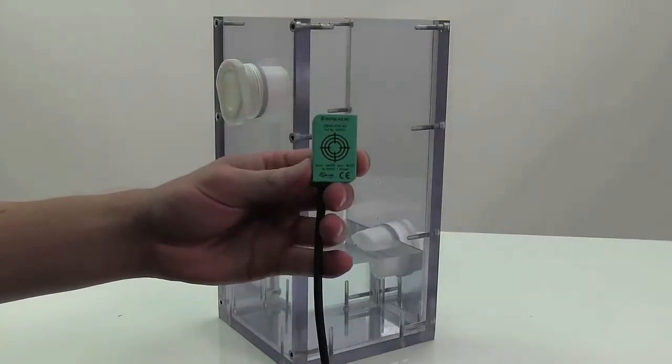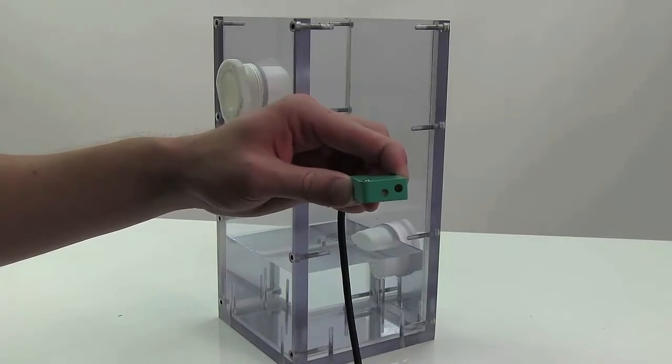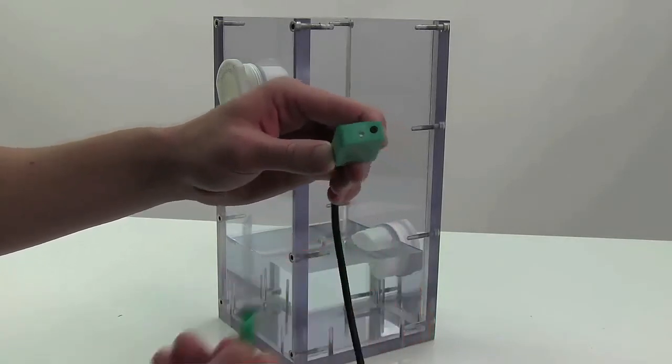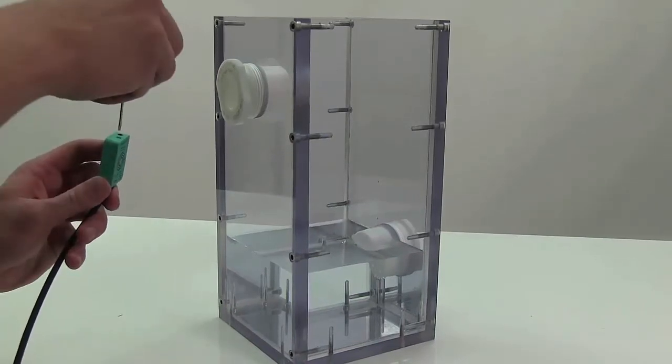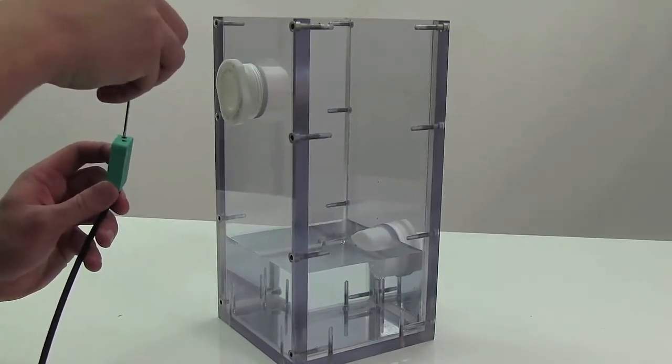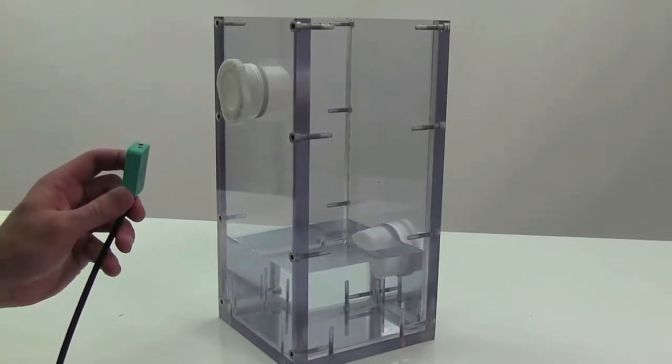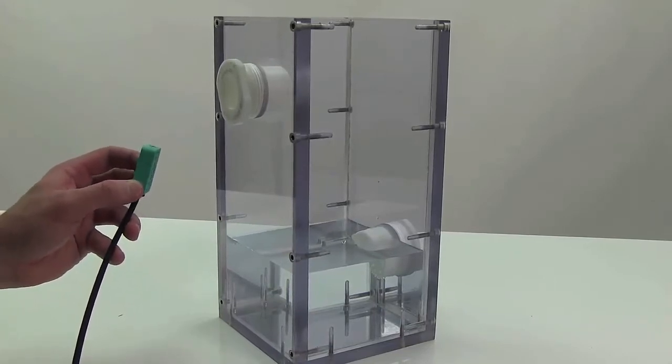This CBN15 has a potentiometer on the top that can be adjusted by a small flat head screwdriver. To start your sensor calibration, rotate the potentiometer counterclockwise until you hear a click. This will indicate that the sensor is on its lowest sensitivity setting.